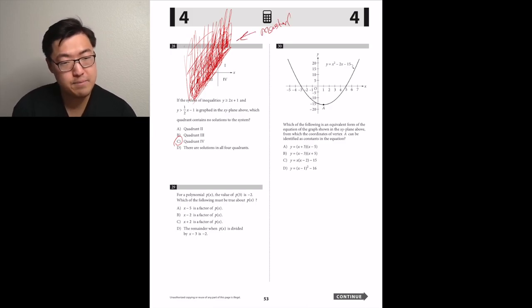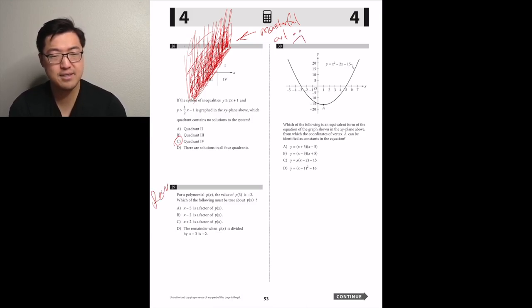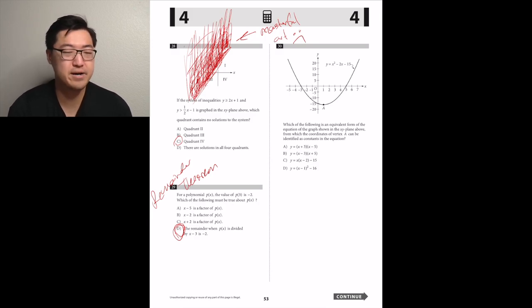Number 29. For a polynomial P of X, the value of P of 3 is negative 2. Which of the following must be true about P of X? It's a factor. Oh, it's remainder theorem. They haven't asked this in a really long time. I think this is the only time that they asked it. It was like this practice test, which has been around for quite a long time. I haven't seen it make an appearance on a QAS like ever since then. But the answer would be D, because that's what remainder theorem tells you. I think it's kind of like an obscure concept, and they realize that, and that's why they haven't brought it back. But it's still good to know. I mean, we know that they had it in their minds at some point, so they might bring it back for the new version of the test. Who knows?